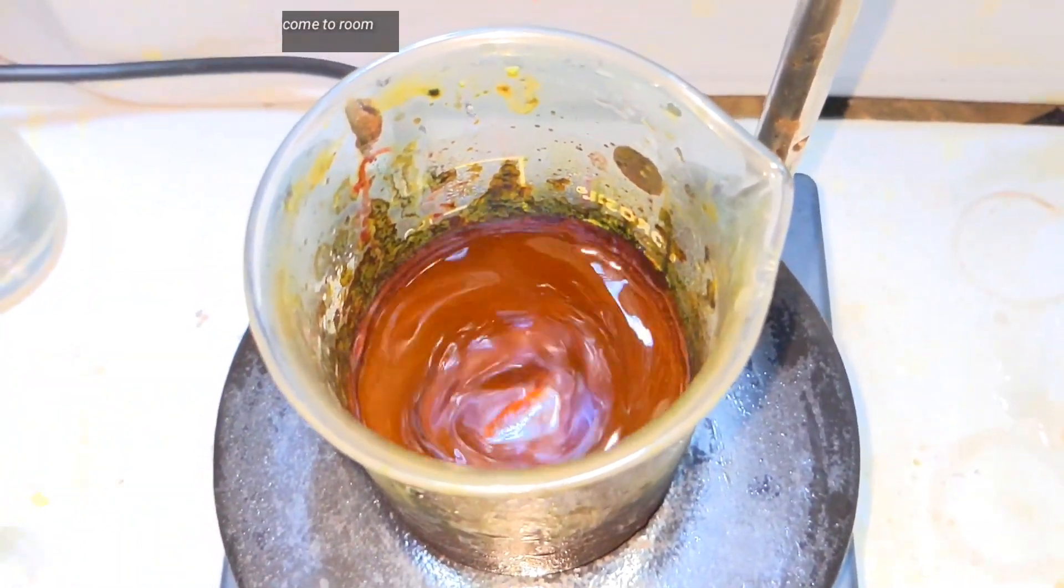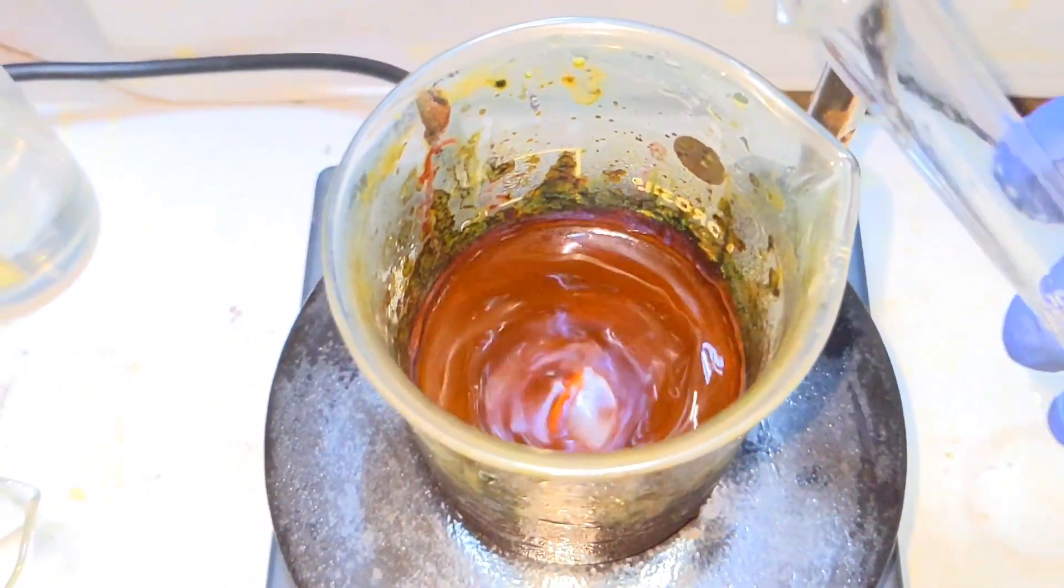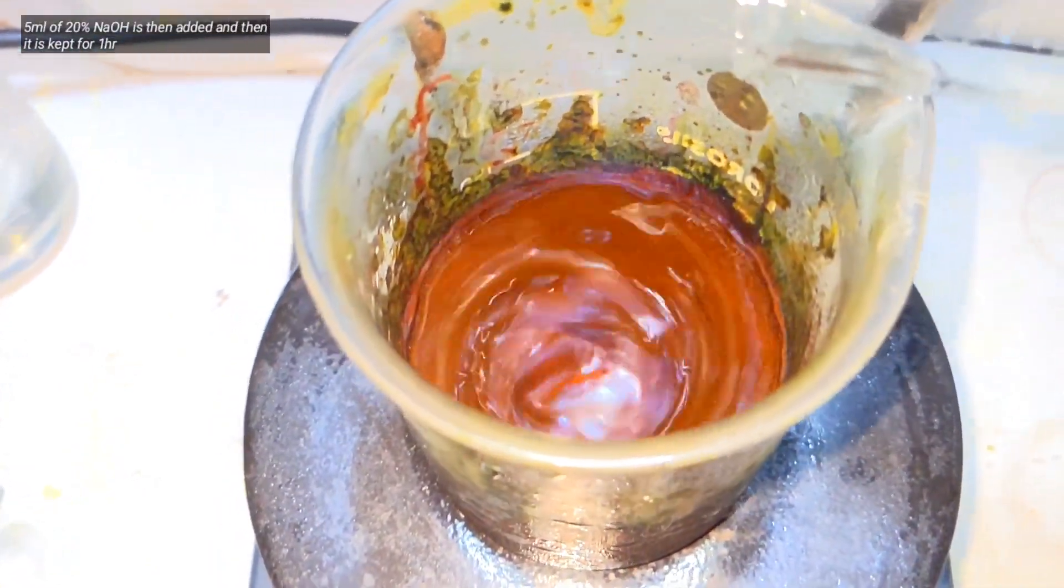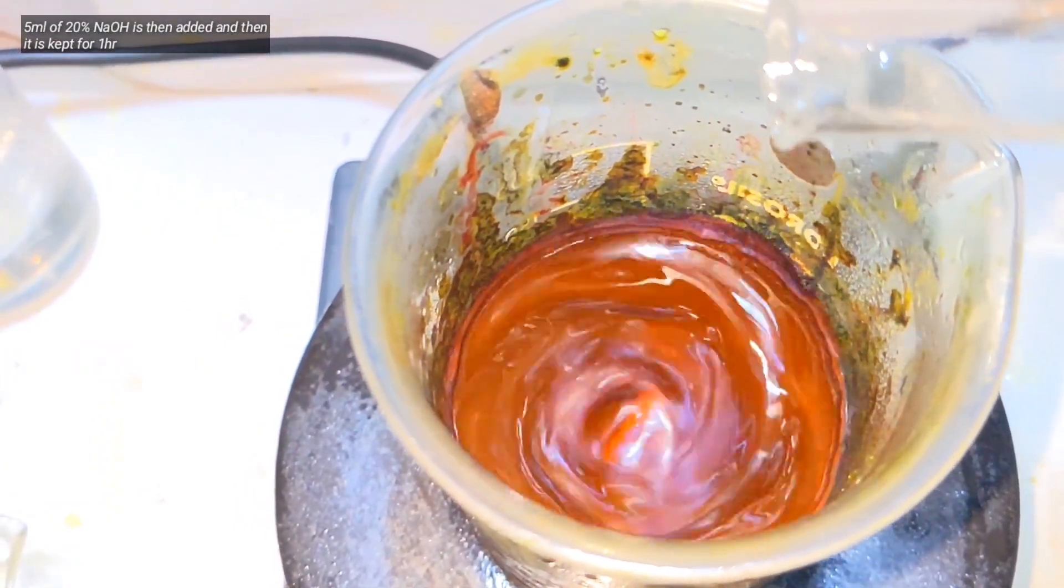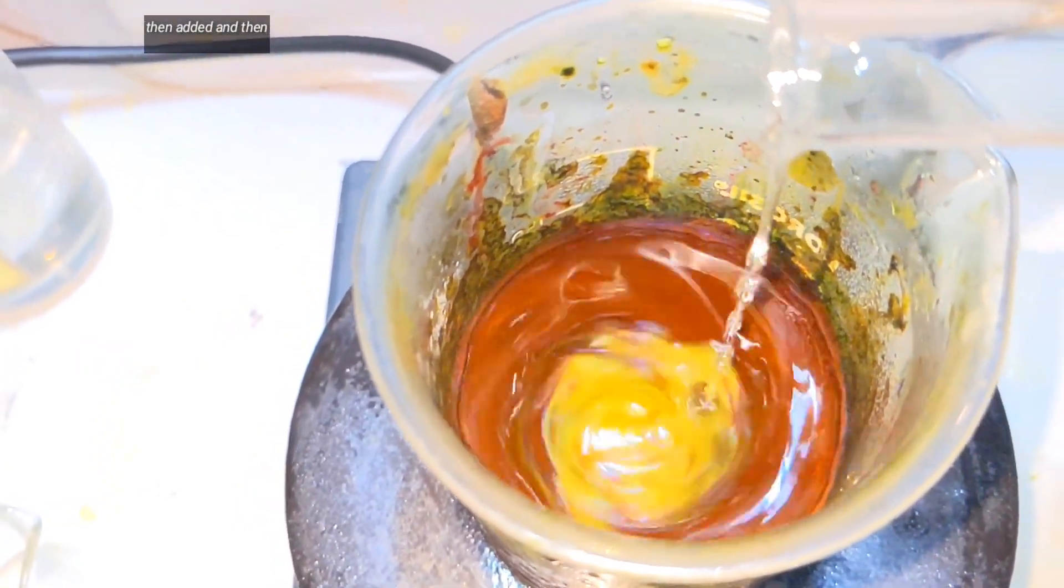When it comes back to room temperature, 5 milliliters of 20% sodium hydroxide solution was added with stirring, and then the stirring was continued for another one hour.